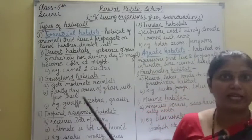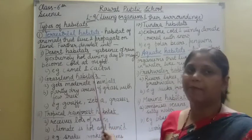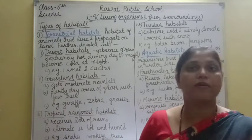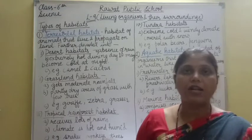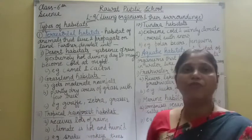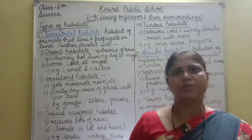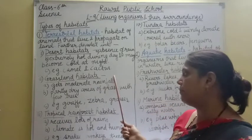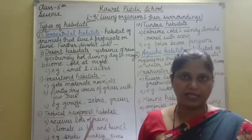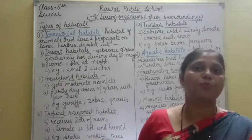Next is grassland habitat. Grassland habitat जहां पर moderate rainfall होती है — ना बहुत ज़्यादा कम ना बहुत ज़्यादा heavy. Partly dry areas of grass with few trees — grass dry होती है और बहुत कम trees होते हैं. जो animals यहां survive करते हैं वो हैं giraffe, zebra, और grasses यहां देखने को मिलती हैं.